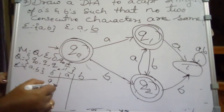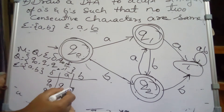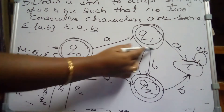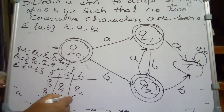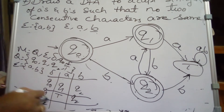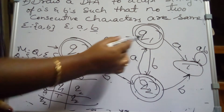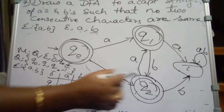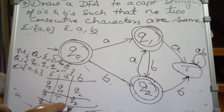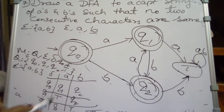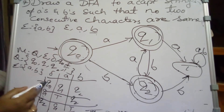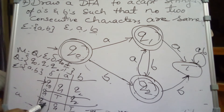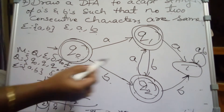Q0 on A goes to Q1; Q0 on B goes to Q2. Q1 on A goes to the trapped state; Q1 on B goes to Q2. The starting state is Q0 and the final states are Q0, Q1, and Q2 — all three are marked as final states with Q0 marked as the starting state.